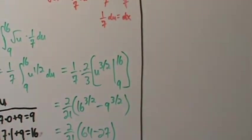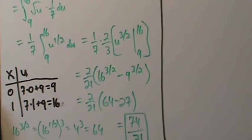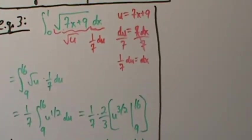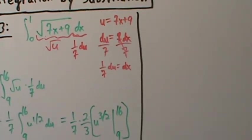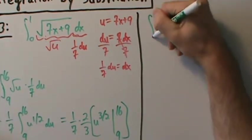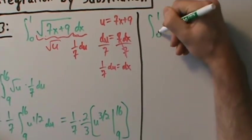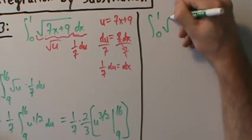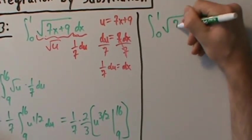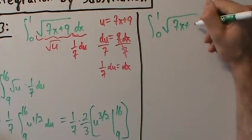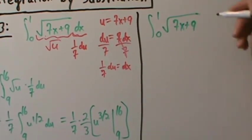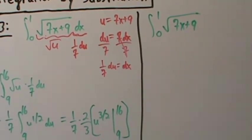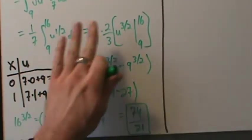So let's go through example three again: the integral from 0 to 1 of the square root of 7x + 9. We won't redo all the calculations since the substitution itself is the same.